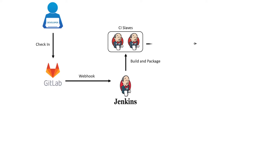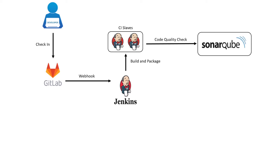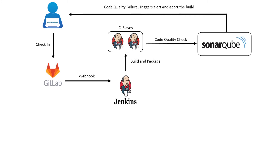In the next stage, Jenkins uses the SonarQube scanner plugin for continuous inspection of code quality, to perform automatic reviews with static analysis of code to detect bugs, code smells, and security vulnerabilities. SonarQube offers reports on duplicated code, coding standards, unit tests, code coverage, code complexity, comments, bugs, and security vulnerabilities. When the code doesn't meet the quality standards, an alert mail will be triggered to the development team and the pipeline will be aborted.